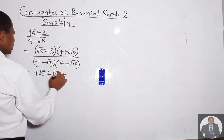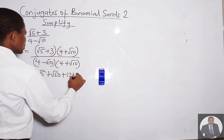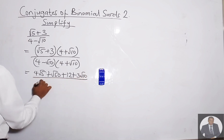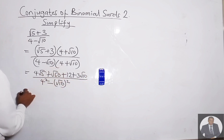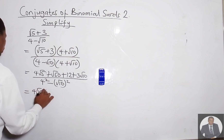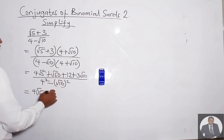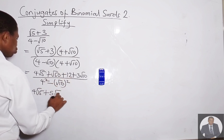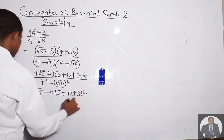Continuing the numerator: 3 times 4 is 12. So we have 4√5 + √50 + 12 + 3√10. Now √50 is the same as √(25×2), which equals 5√2. So the numerator becomes 4√5 + 5√2 + 12 + 3√10.